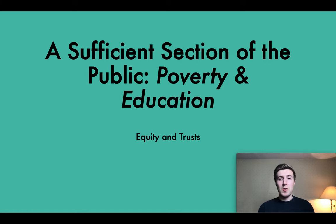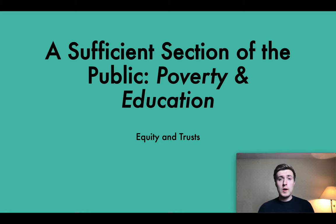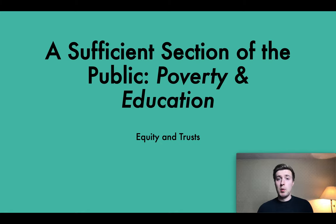As explained in my previous video, the meaning of 'sufficient section of the public' differs depending on the category of charitable purpose from section 3 subsection 1 of the Charities Act in question. The usual rule applies to all categories of charitable purposes, apart from purposes which prevent or relieve poverty or advance education. In this video we're going to turn to the different rule that applies in respect of purposes aimed at preventing or relieving poverty and those aimed at advancing education.